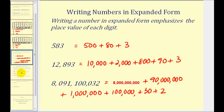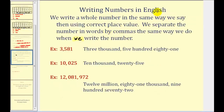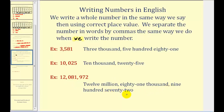The last thing we'll do is take a look at how we write whole numbers in English. We write a whole number in the same way that we say them using correct place value. We separate the number in words by commas the same way we do when we write the number. So for example, here we have three thousand, five hundred eighty-one. Here we have ten thousand, twenty-five — notice the comma between the ten thousand and the twenty-five. And then here we have twelve million, eighty-one thousand, nine hundred seventy-two.